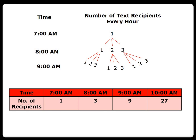We have the number of recipients and the time: 7 a.m. is 1, 8 a.m. is 3, 9 a.m. is 9, and 10 a.m. is 27. What would be the number of recipients at 11 a.m.?